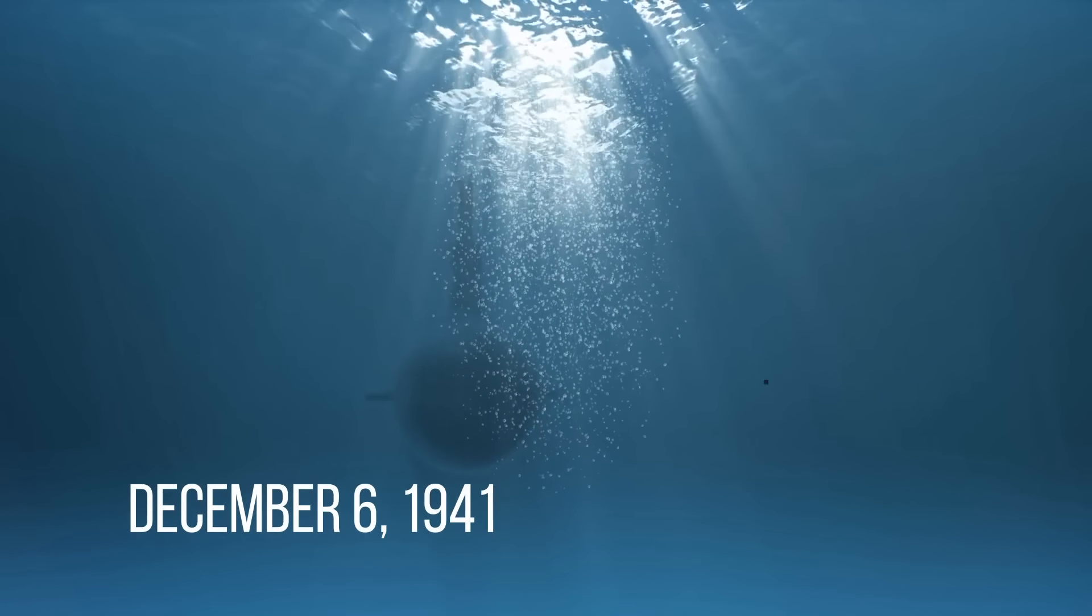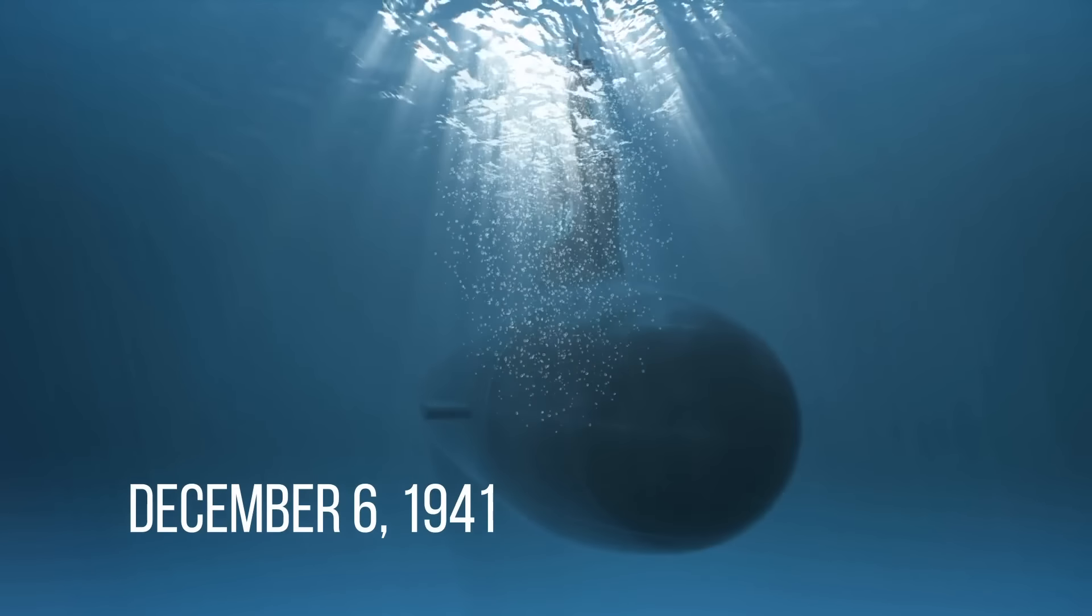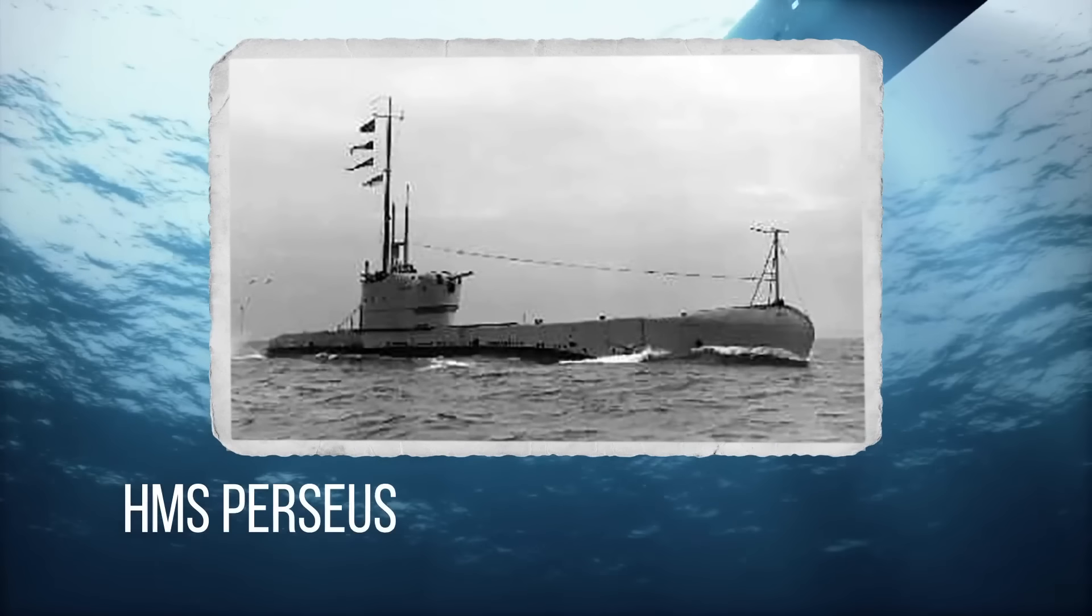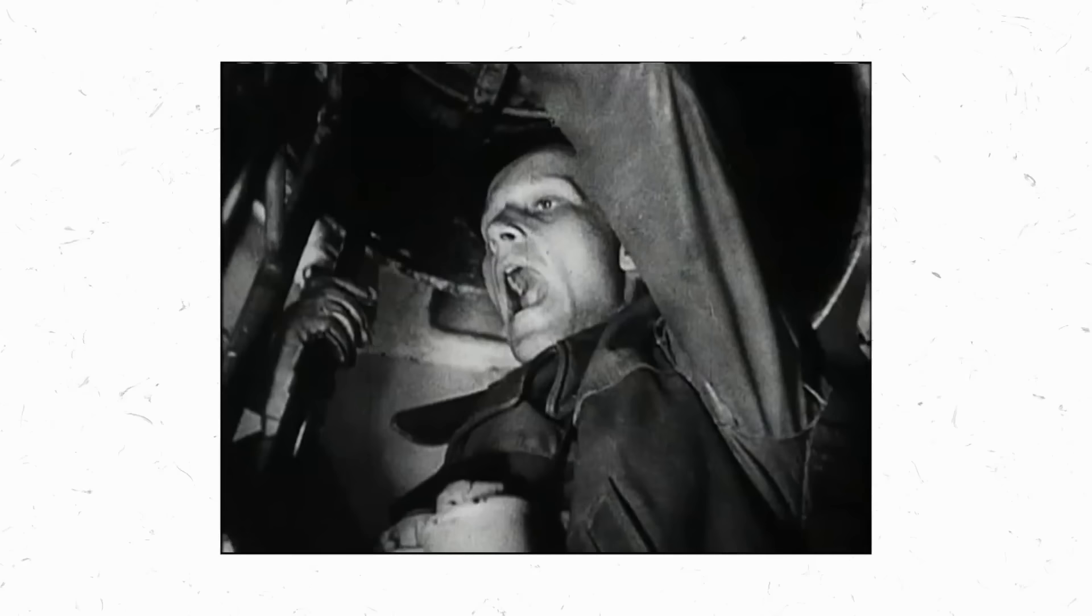On the 6th of December, 1941, disaster struck the British submarine HMS Perseus. It hit a mine while patrolling the Mediterranean. The ship quickly sank, taking almost all of its 59 crew members and two passengers to the bottom of the sea.